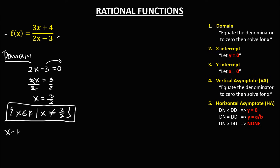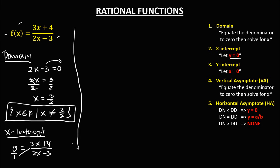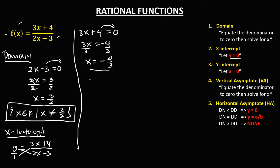For the x-intercept, we let y equal to 0. So 0 equals 3x plus 4, over 2x minus 3. Do cross multiplication, so 3x plus 4 equals 0. To solve for x, transpose this positive 4, that becomes negative 4, then divide by 3. So x equals negative 4 over 3. Therefore, the coordinate of the x-intercept is (negative 4 over 3, 0).